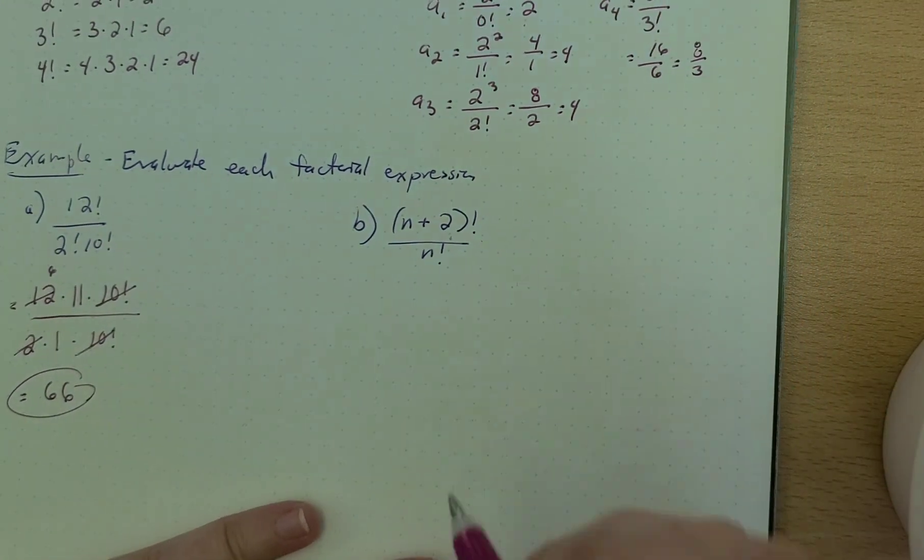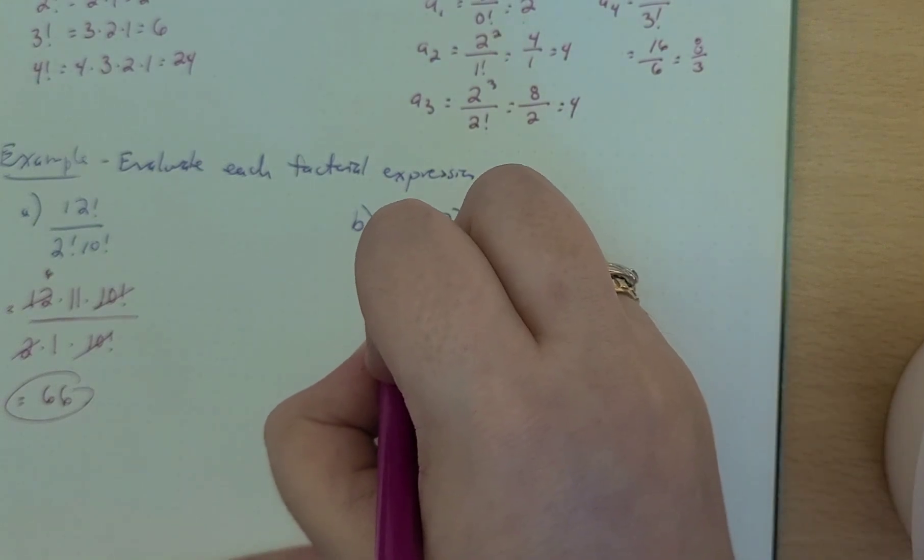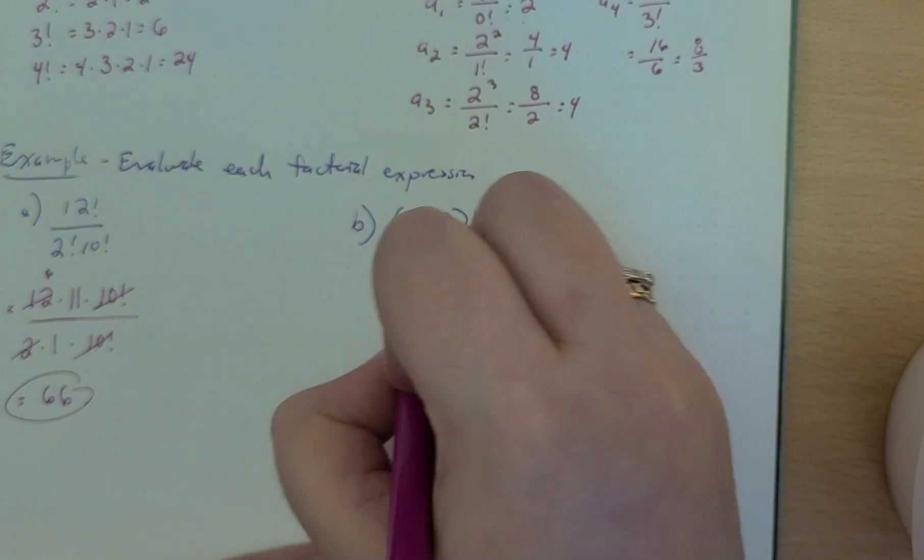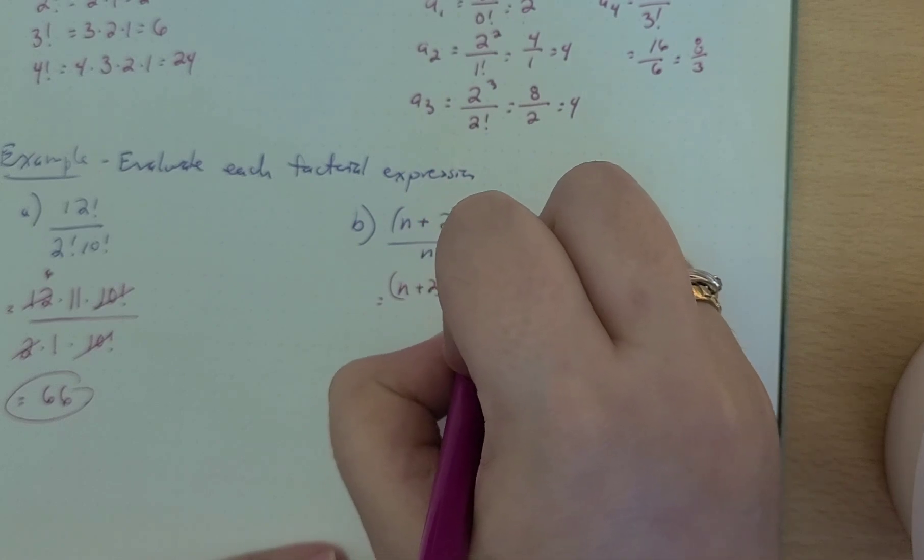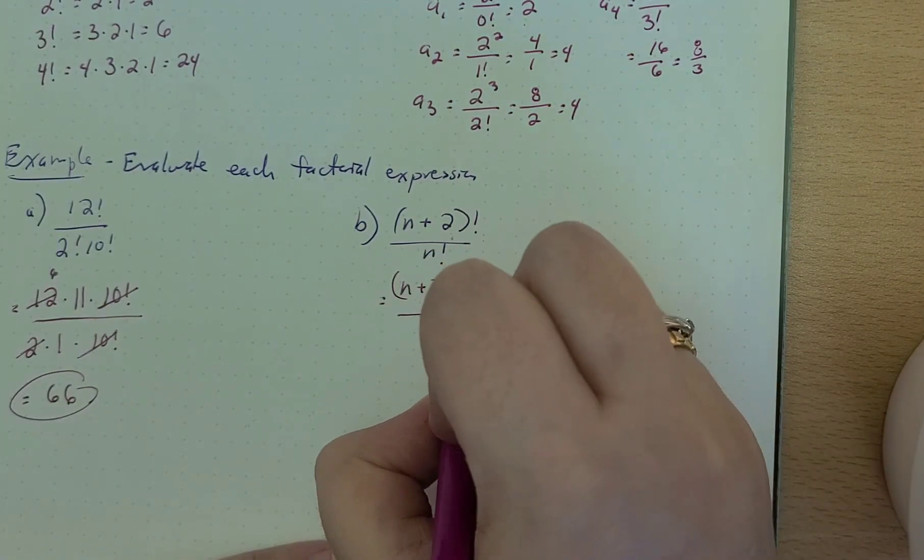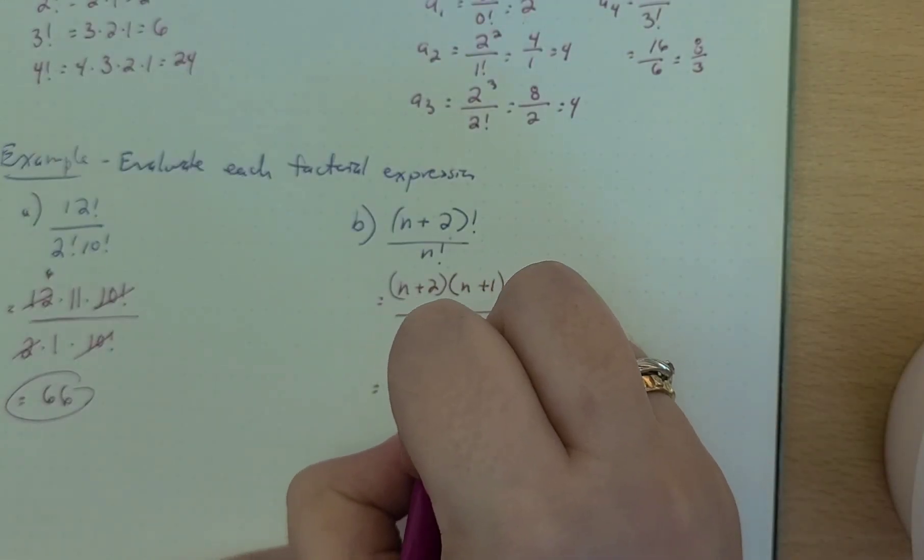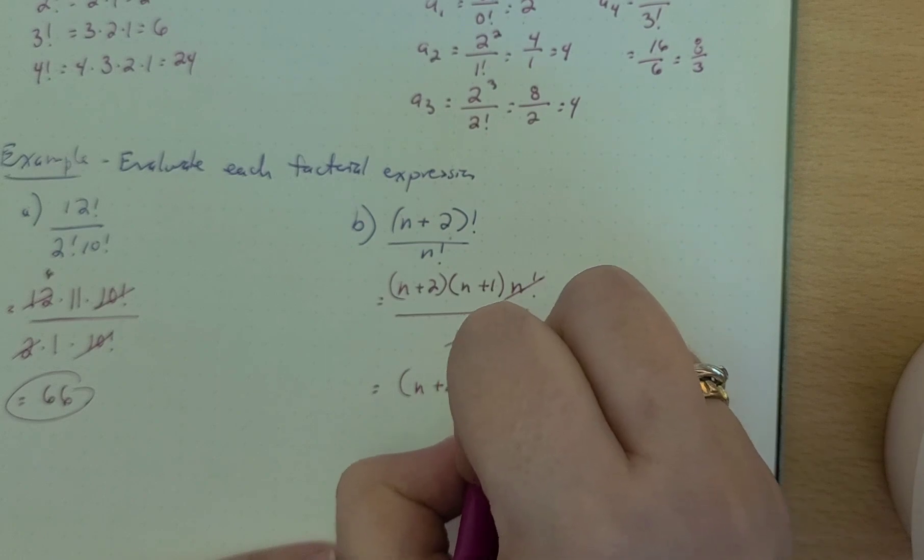Here we have n plus 2 factorial over n factorial. We can think of that as n plus 2 times n plus 1 times n factorial over n factorial. These cancel out, so we're just left with n plus 2 times n plus 1.